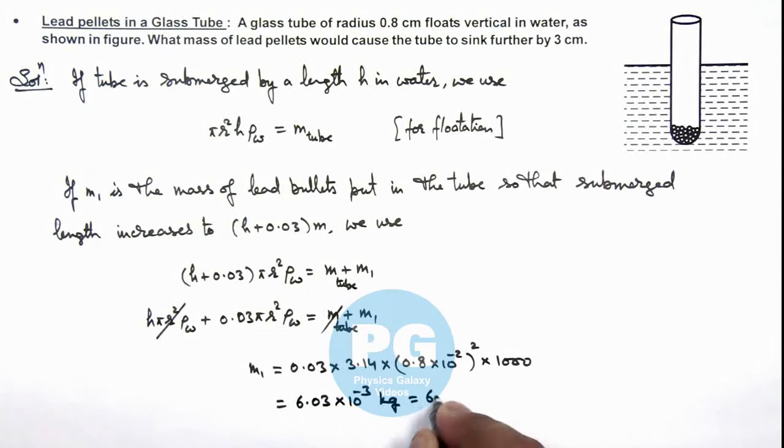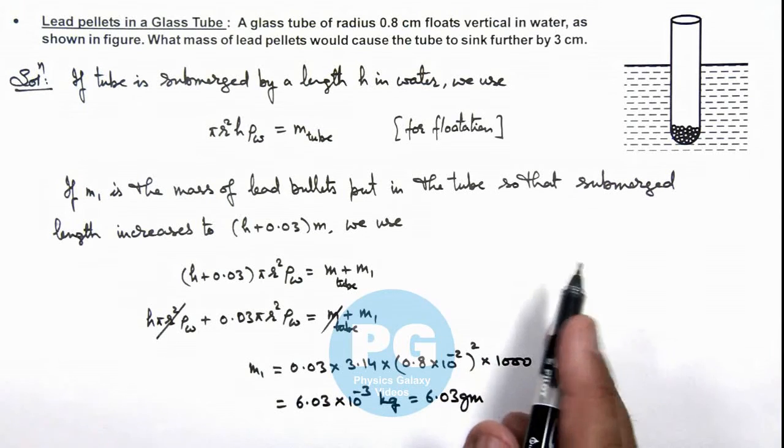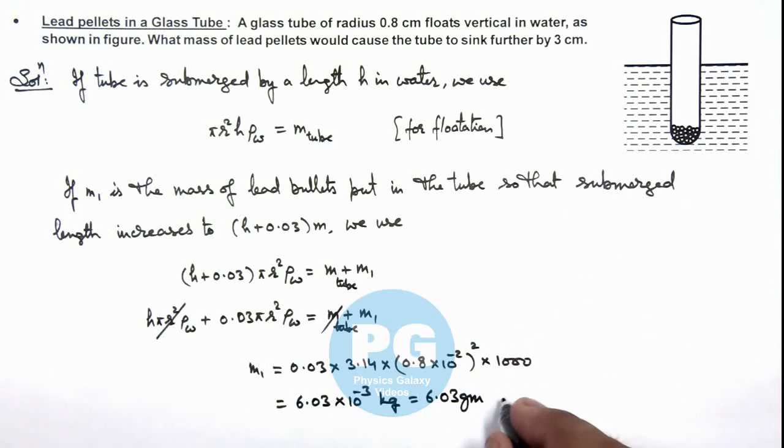Or it is 6.03 gram, that is the mass of lead pellets required to sink the tube further by 3 centimeter. That is the result of this problem.